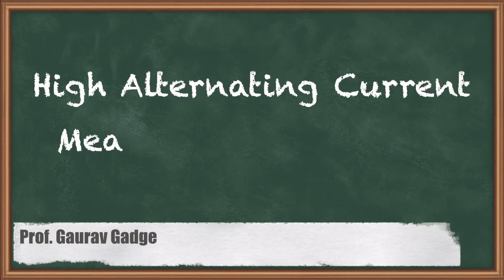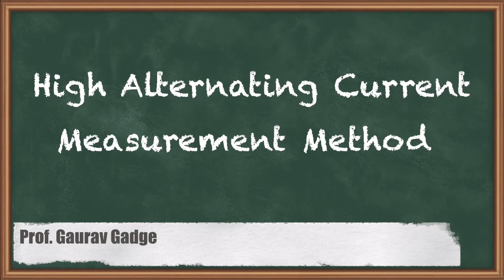Hello friends, we are discussing the next methodology for the measurement of high current. In this lecture, we will be discussing the measurement of high alternating currents, that is AC current, at normal frequency called power frequency, and as per Indian standards that frequency value is 50 Hertz.